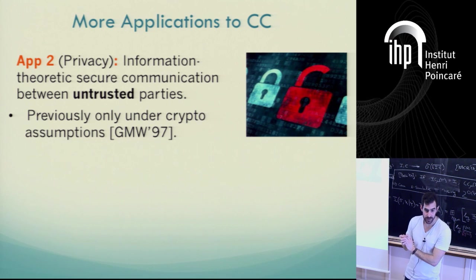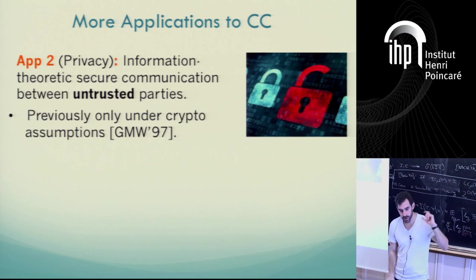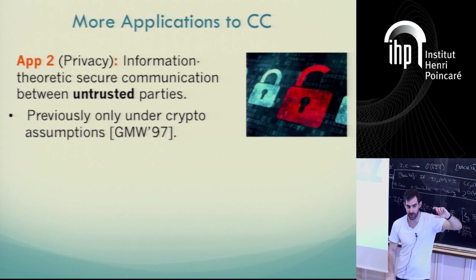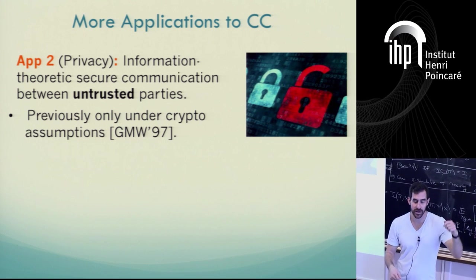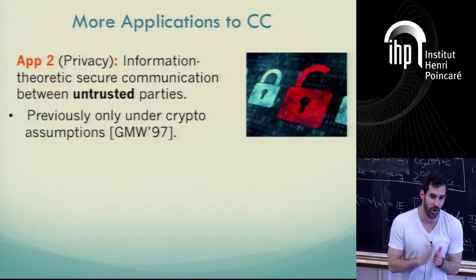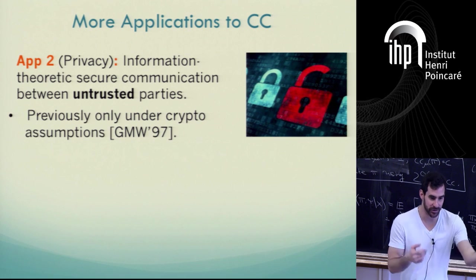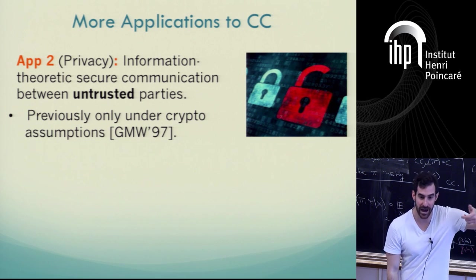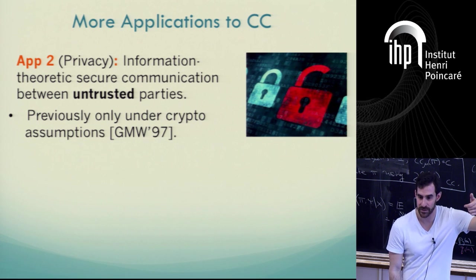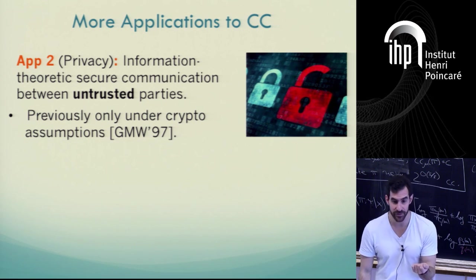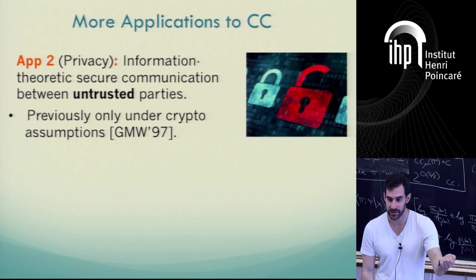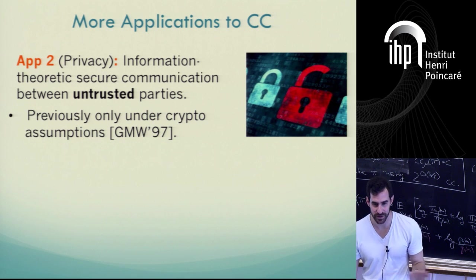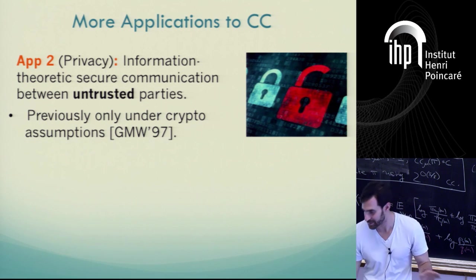We use the same odometer with a twist: with probability half, we reverse the order of senders. Because if we keep the same order, Bob can always refuse to click and learn information for free. But if with probability half we exchange the order of speakers, it turns out that with probability at least half, Alice will catch Bob if he's trying to cheat. This is the very high-level intuition.